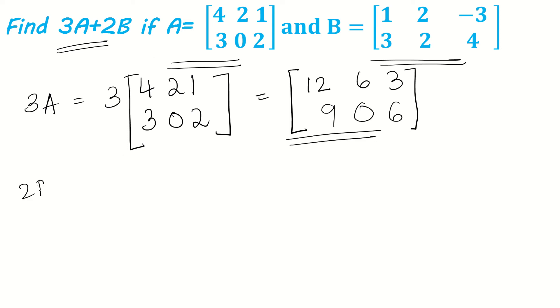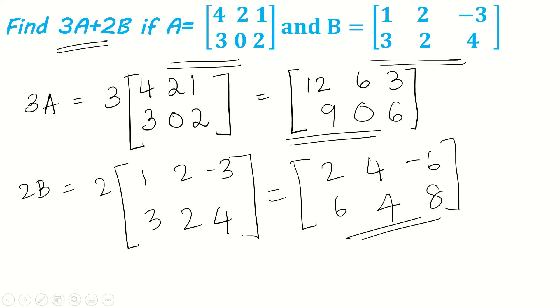Now we have 2B. 2B is 2 into matrix B: 1, 2, minus 3, 3, 2, 4. 2 times 1 is 2, 2 times 2 is 4, 2 times 3 is 6. So 2 into minus 3 becomes minus 6. 2 times 3 is 6, 2 times 2 is 4, 2 times 4 is 8. We found 2B also.